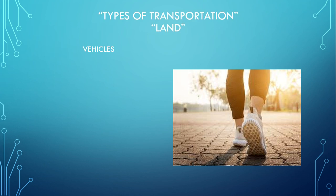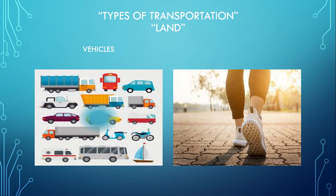Types of transportation on land. First, we have vehicles — and there are a lot of vehicles. There's a van, truck, bus, car, and luxury car. Those are the types of transportation vehicles.